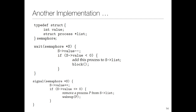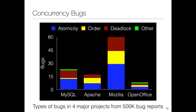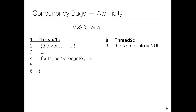Moving to concurrency bugs: atomicity violations, order violations, and deadlocks are a few important types. An example of an atomicity bug: thread T1 checks a pointer, T2 sets it to null, then T1 calls fputs with a null pointer—which is wrong. The fix is to surround both threads where shared variables are used with mutex lock and unlock.